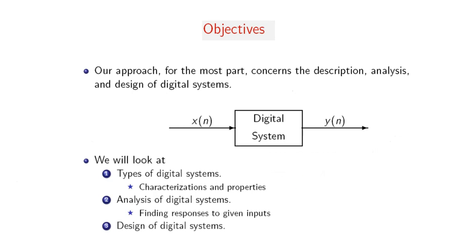What are the objectives of digital signal processing? We have a digital system with X of N as a discrete-type input signal and Y of N as the output. The digital system works with digits, and our approach is concerned with the description, analysis, and design of digital systems. The design is important — we are designing digital processing systems in order to produce the desired output based on the input for specific purposes.